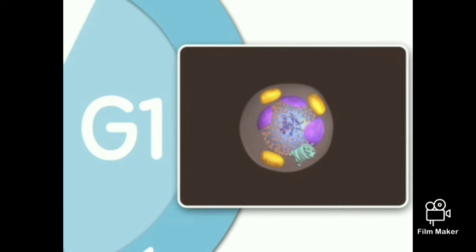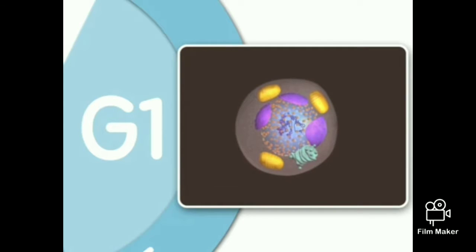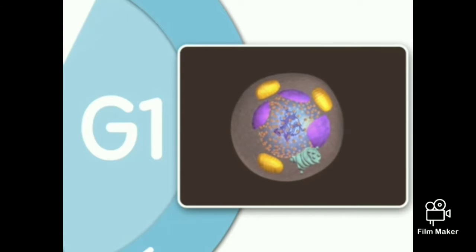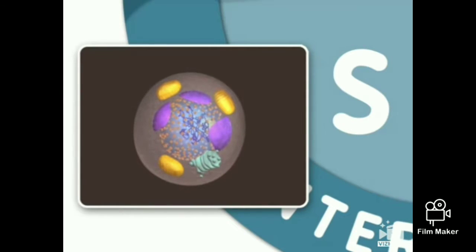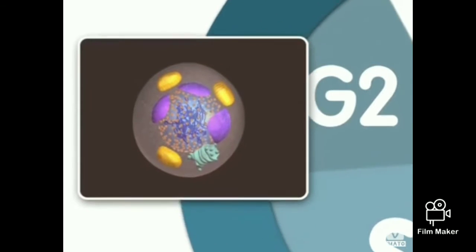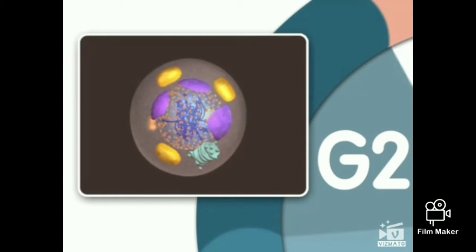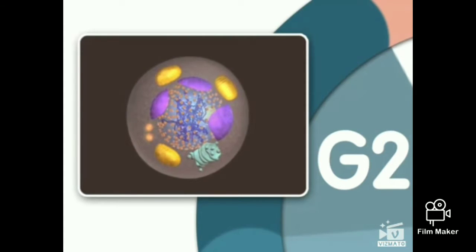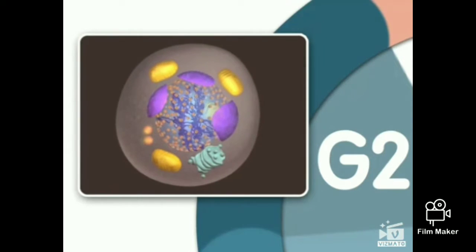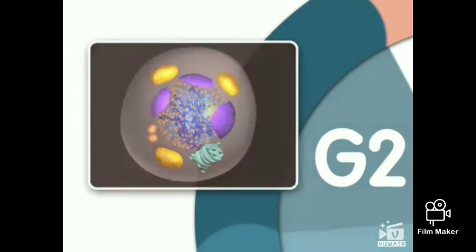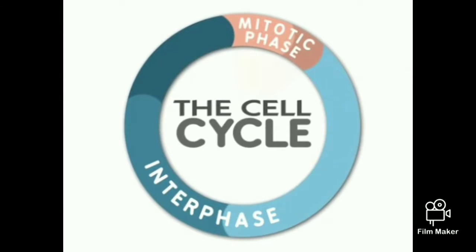G1, or GAP1, is the first growth stage of interphase. In G1, the cell grows to nearly its full size and performs many of its specific biochemical functions in the organism. Next is the S, or synthesis phase — an important stage because it is during the S phase that DNA in the nucleus is replicated. The cell next enters another growth stage called G2, or GAP2. It is during G2 that the cell finishes growing. Once the cell has duplicated DNA in the nucleus and two centrosomes have appeared in the cytoplasm, mitosis can begin.